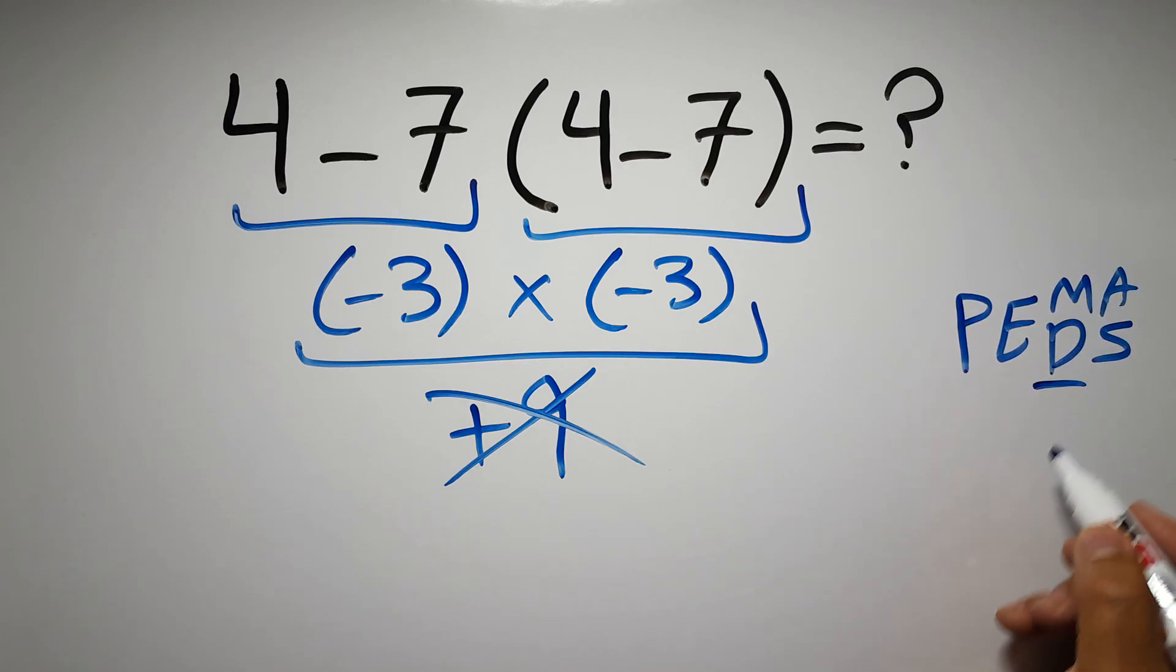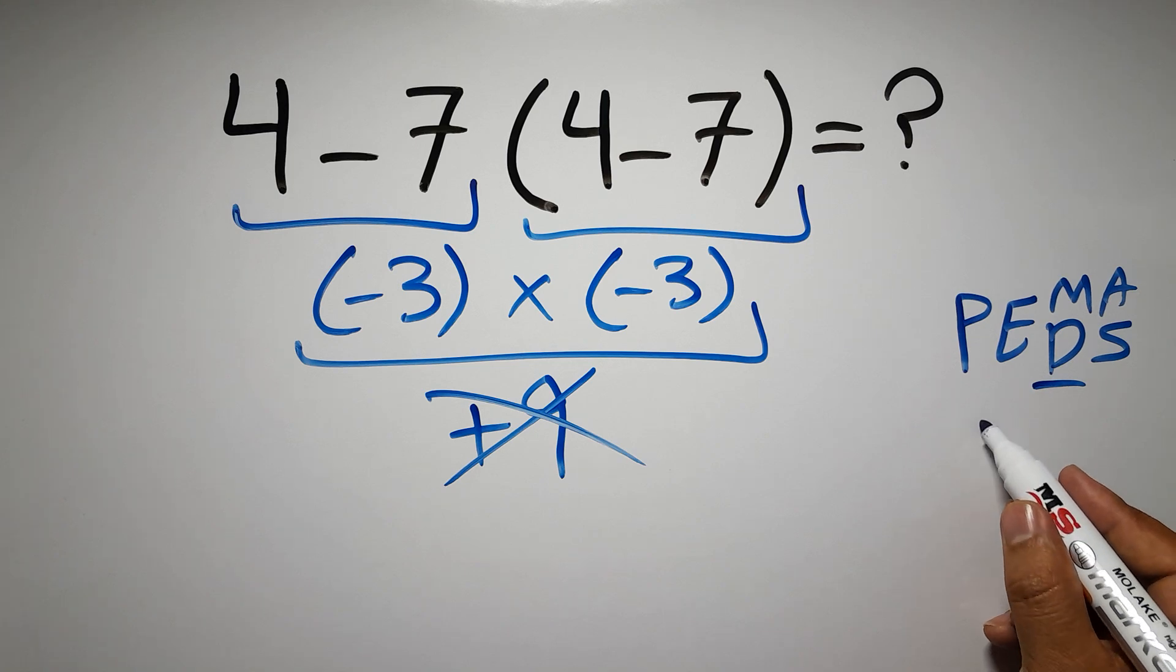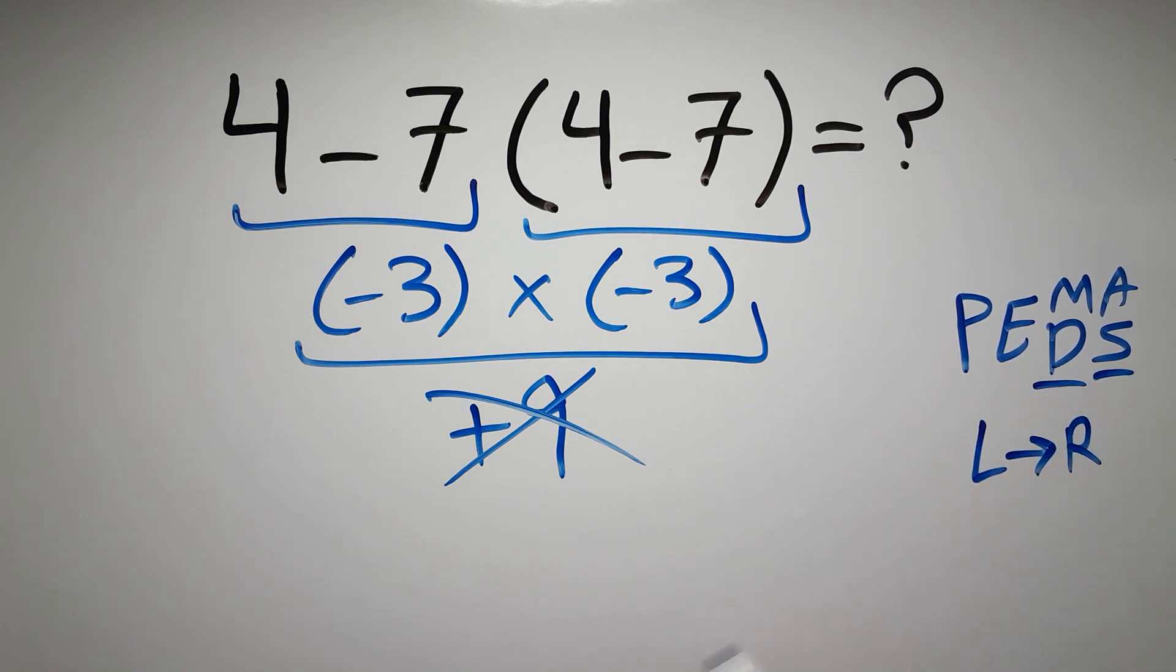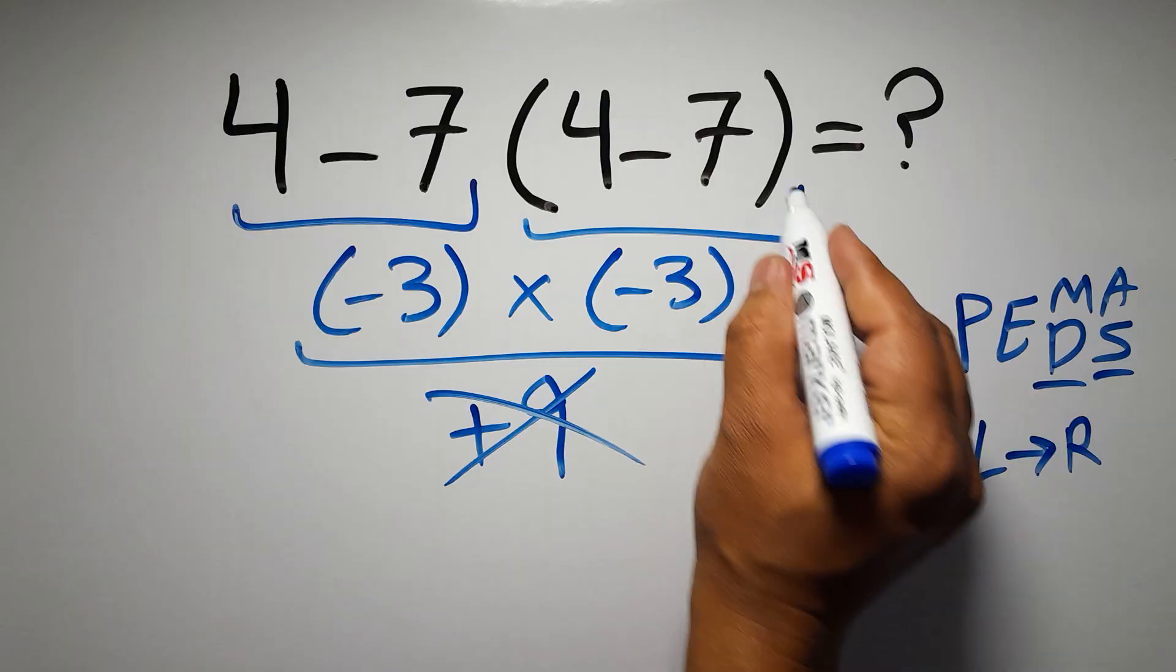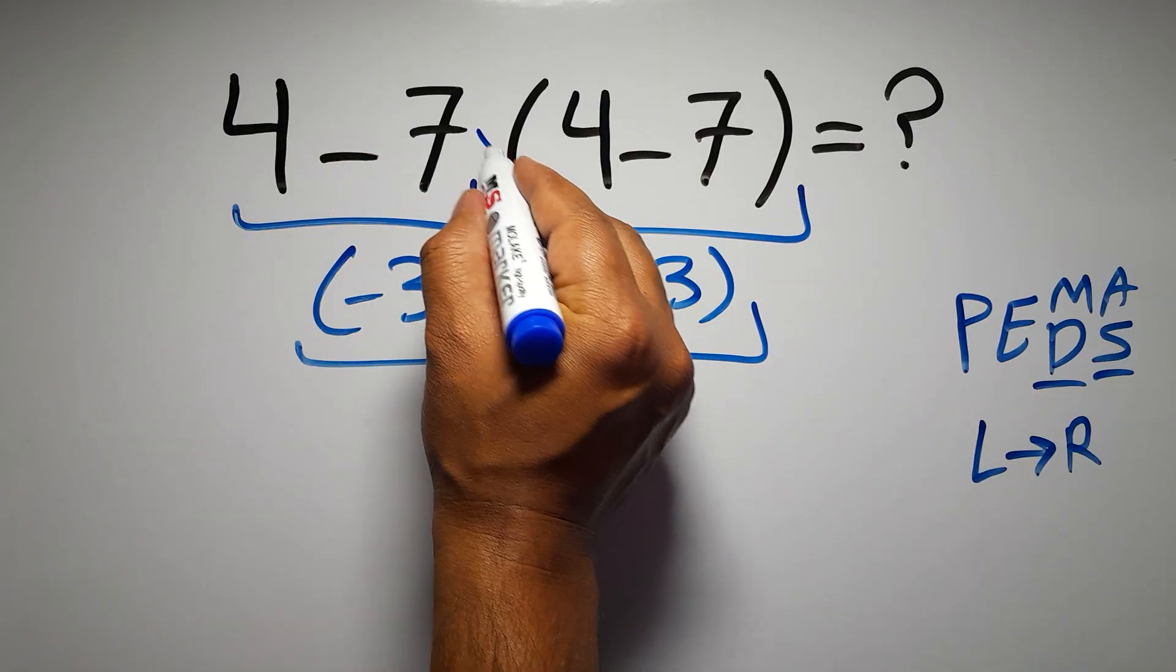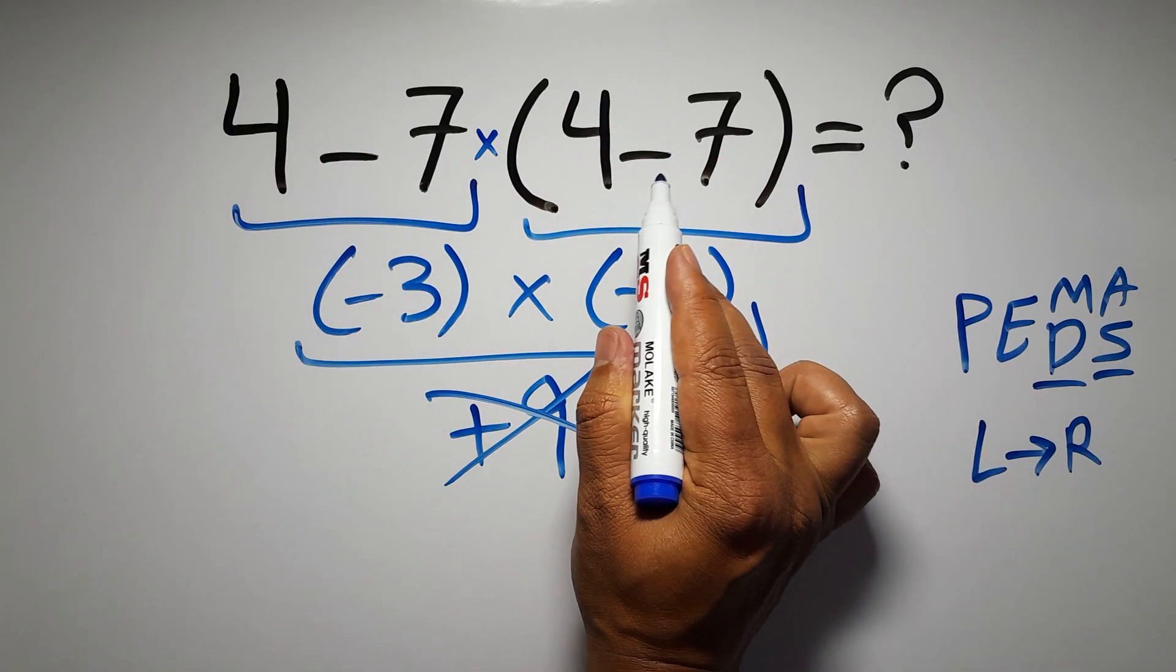Remember that multiplication and division have equal priority and we have to work from left to right, and the same applies to addition and subtraction. In this expression we have one subtraction, one multiplication, and one parentheses. Inside this parentheses we have one subtraction.